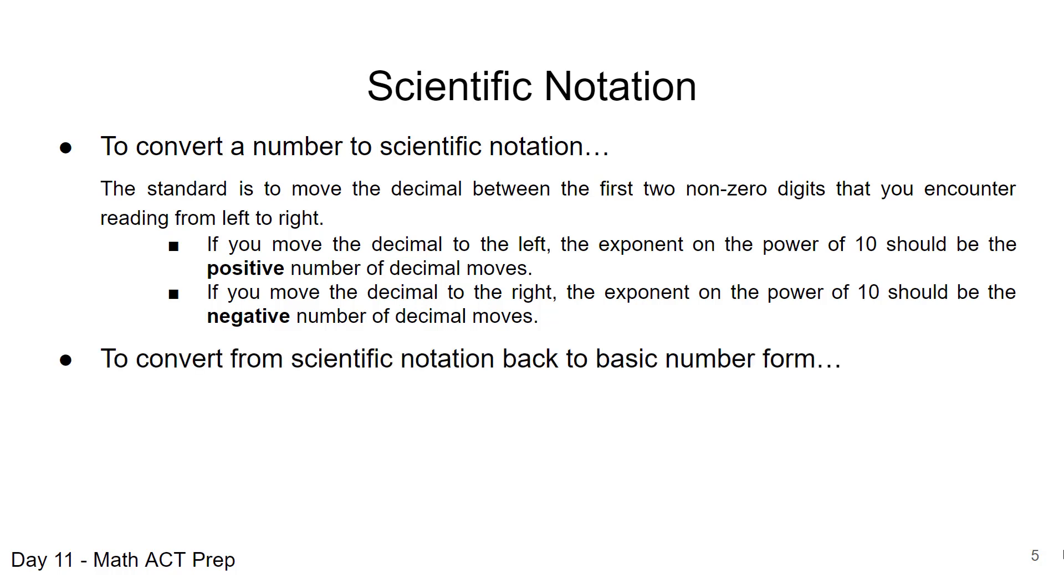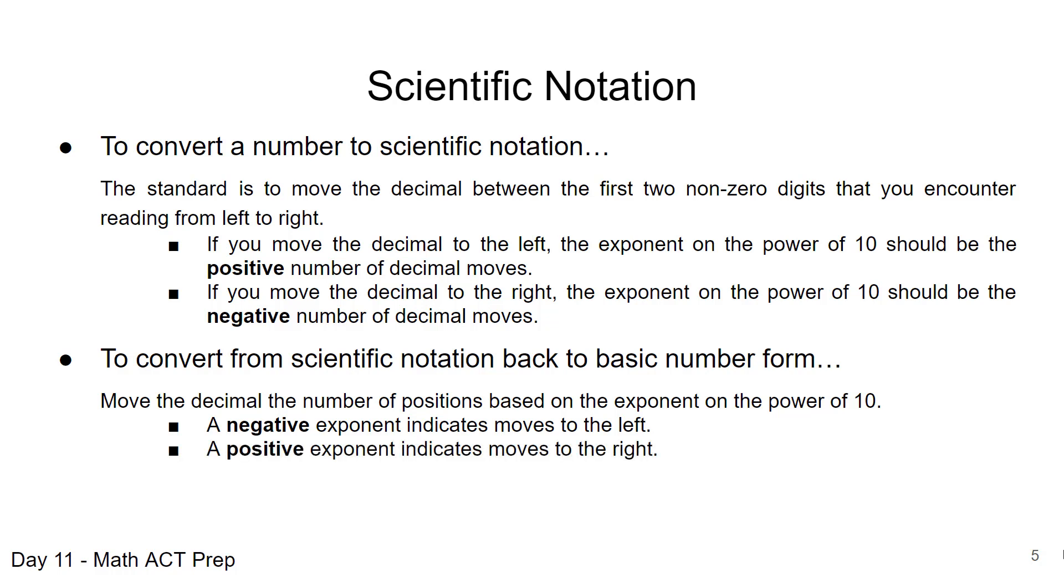The other way when we're going in the opposite direction to go from scientific notation back to basic number form, we're going to move the decimal the number of positions based on the exponent in that power of 10. That's how we got the exponent. It's based on the number of moves. So again, a negative exponent, which means a really small number, we're going to move the decimal point to the left. Positive exponent, which is a really big number, we're going to move to the right.